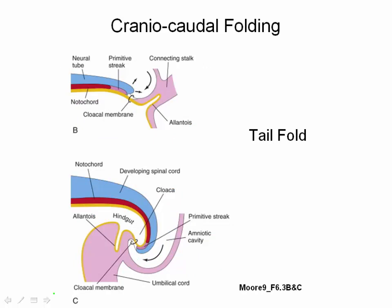This slide depicts caudal or tail folding, again in a sagittal view at the tail end of the embryo. Growth that occurs at the tail end of the neural tube causes the caudal region of the embryo to also flex ventrally. As a result, the connecting stalk is brought to a more ventral position. It is important for the connecting stalk to be on the ventral aspect of the embryo as it soon transforms into the umbilical cord.